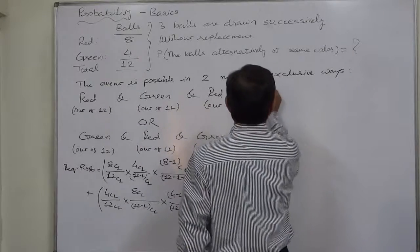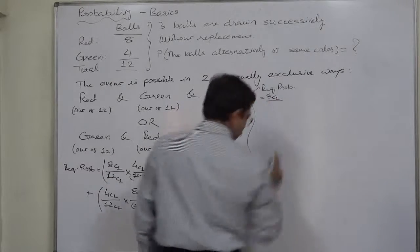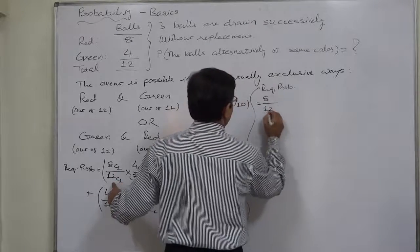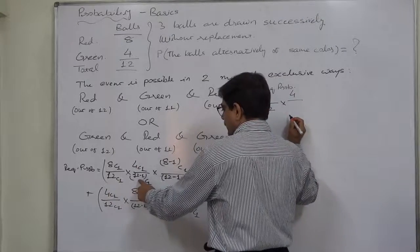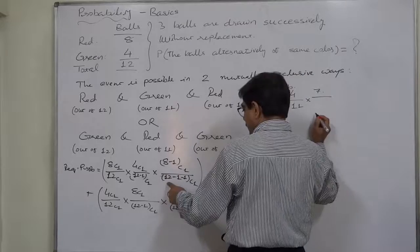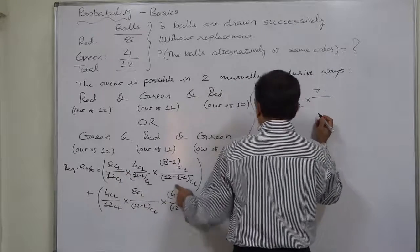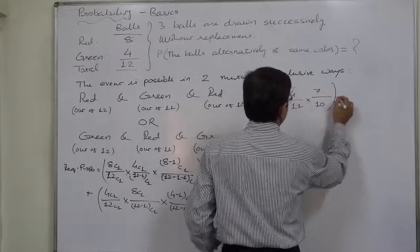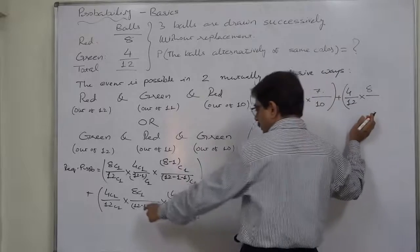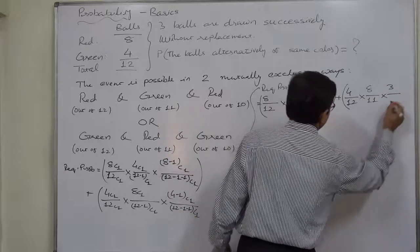Now let us simplify. The required probability becomes: (8/12) × (4/11) × (7/10) + (4/12) × (8/11) × (3/10). Since nC1 equals n, the denominator for both cases combined is 12 × 11 × 10 = 1320.